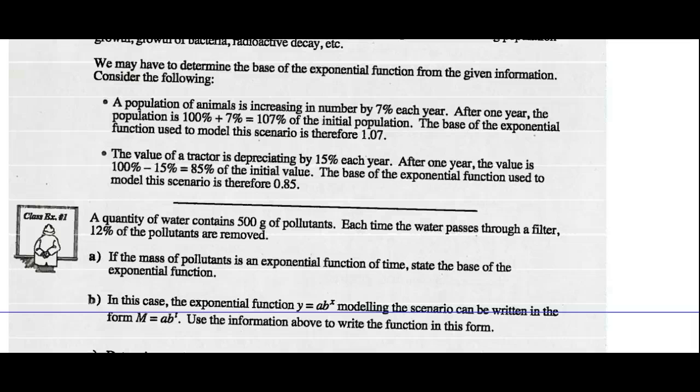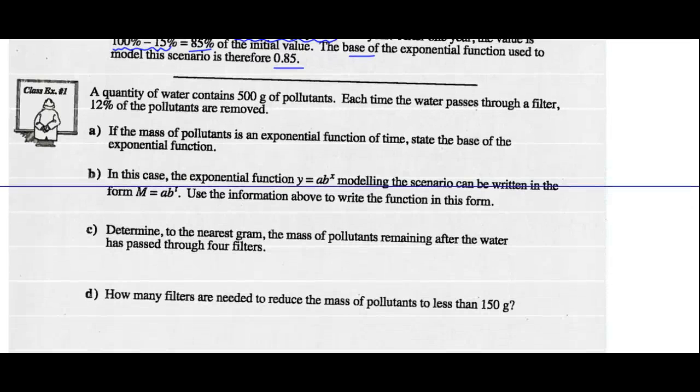We may have to determine the base of the exponential function from the given information. Consider these two important statements: A population of animals increasing by 7% each year, after one year the population is 100% plus 7% or 107%. The base of the exponential function would then be 1.07. Or if a tractor is depreciating by 15% each year, the value is 100% minus 15% or 85%, and the base would be 0.85. When we have to come up with bases, increasing we add it to 100%, decreasing we subtract it from 100%.